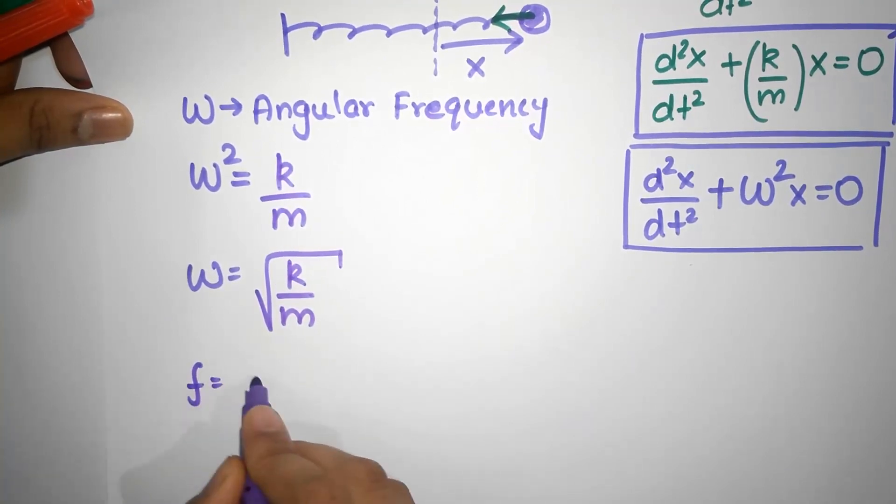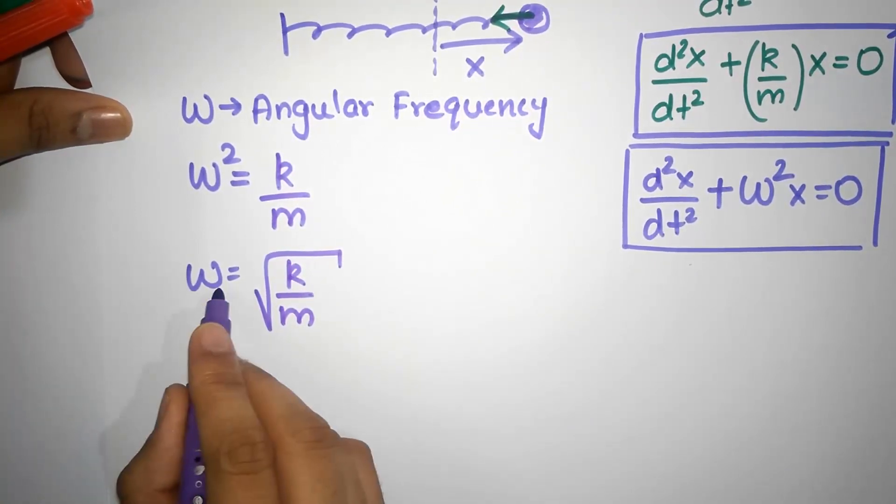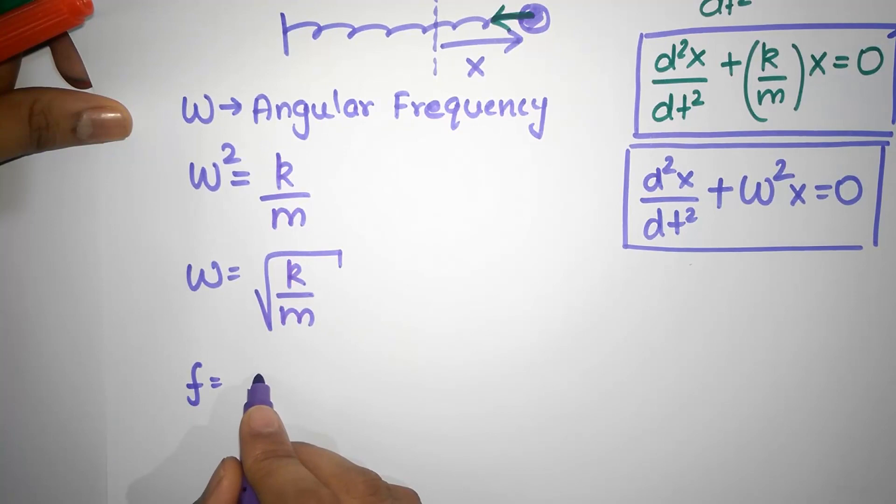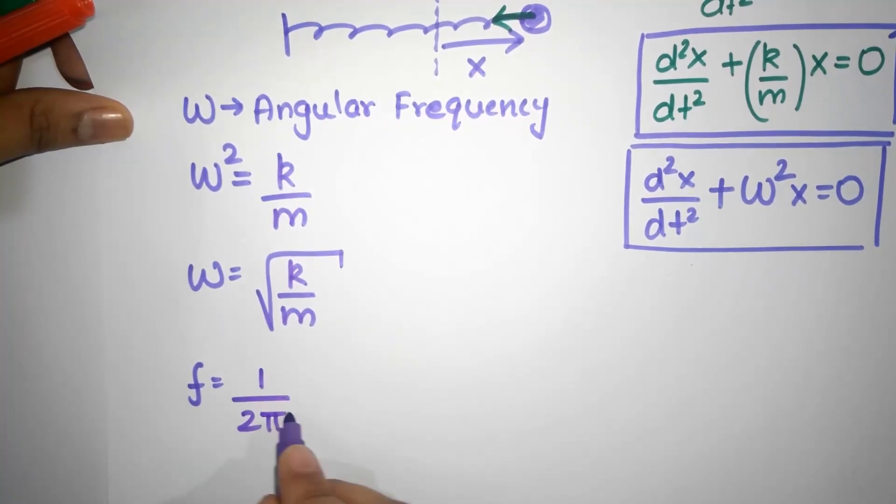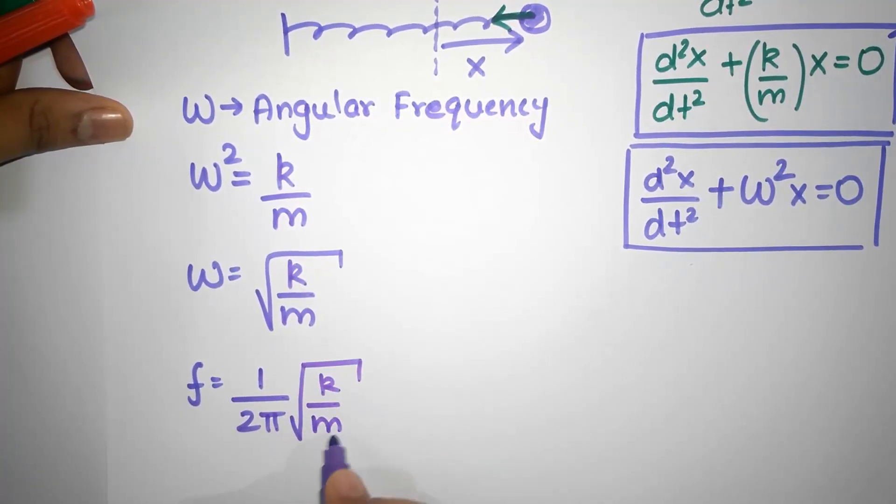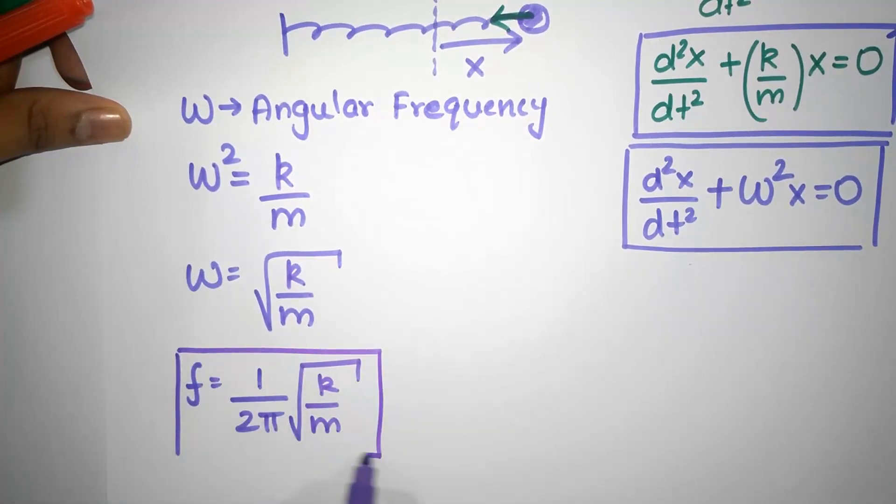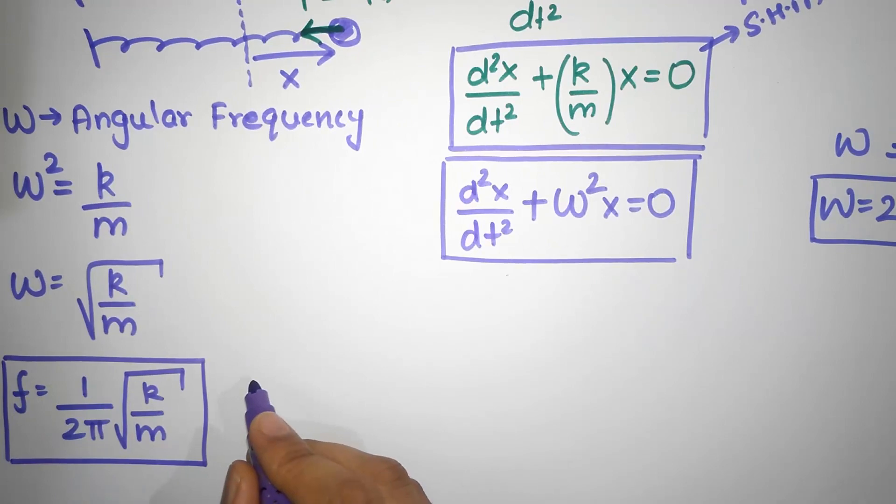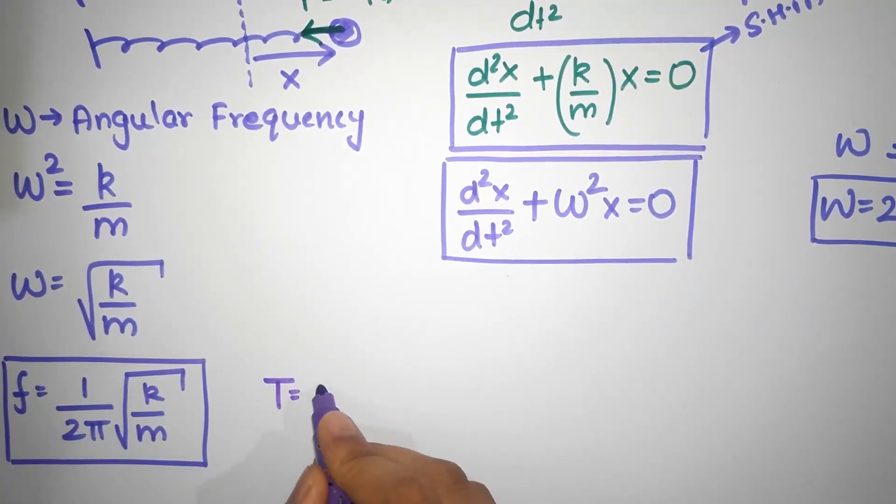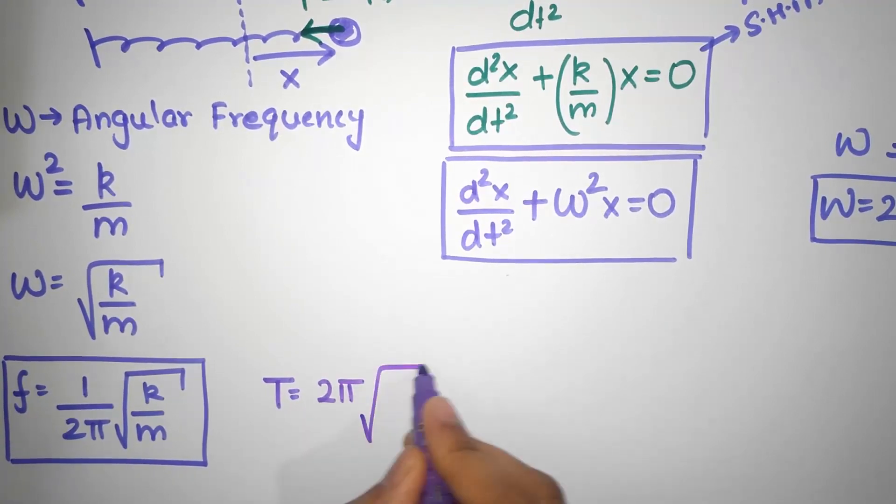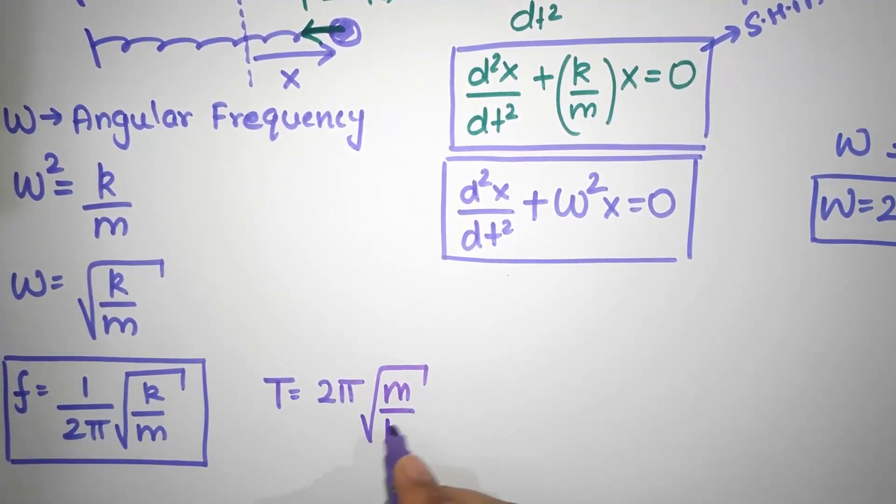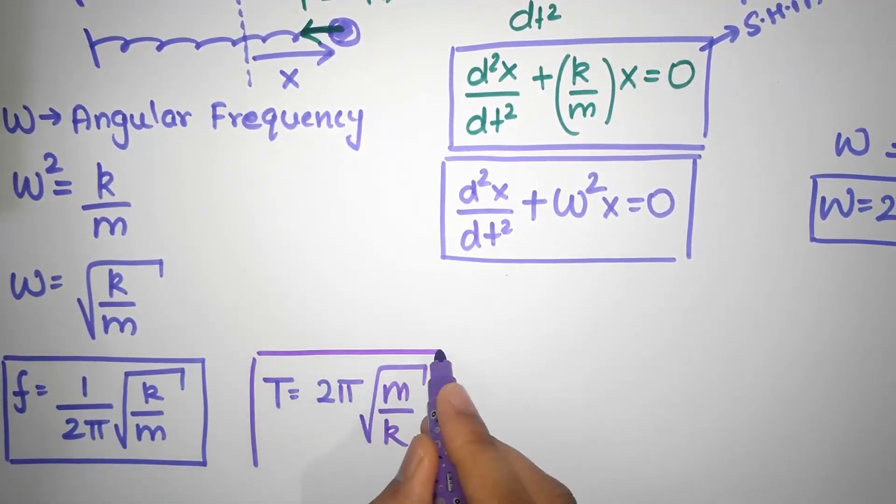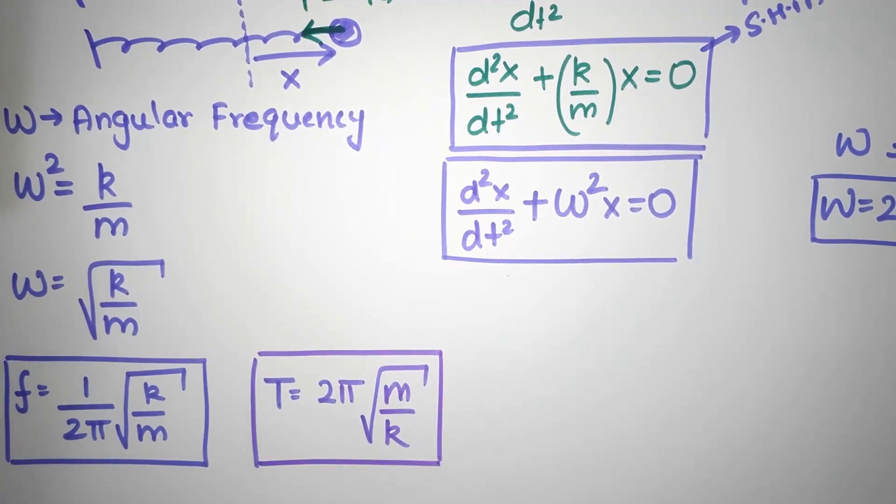The frequency is going to be 1 by 2 pi. This is 2 pi f, right? So, f is going to be 1 by 2 pi into the square root of k divided by m. That's the formula for the frequency for a spring. Not in general, only for a spring. And the time period is always the reciprocal of this. So, that's going to be 2 pi square root of m by k. That's the time period.